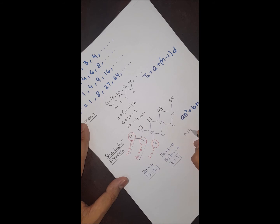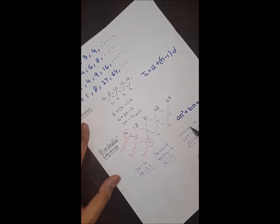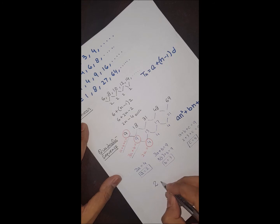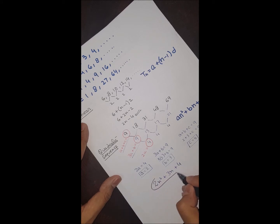Now using the first equation: a + b + c = 9. Substituting a = 2 and b = 3 gives 2 + 3 + c = 9, so c = 9 − 5 = 4. Now we have all values: a = 2, b = 3, c = 4. Substituting into the formula gives the nth term: 2n² + 3n + 4.